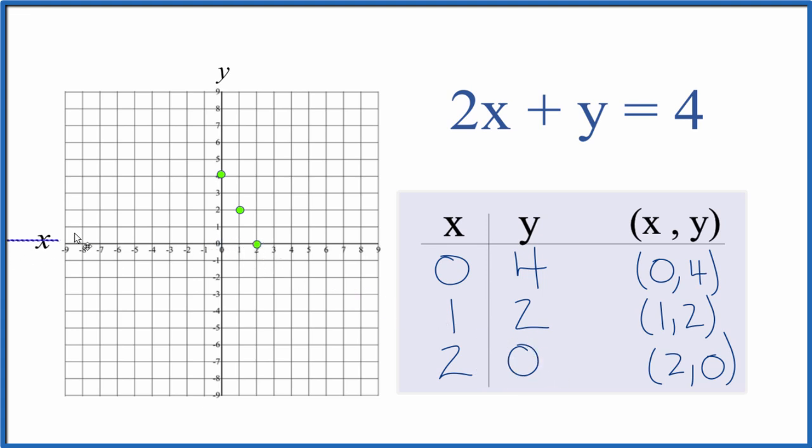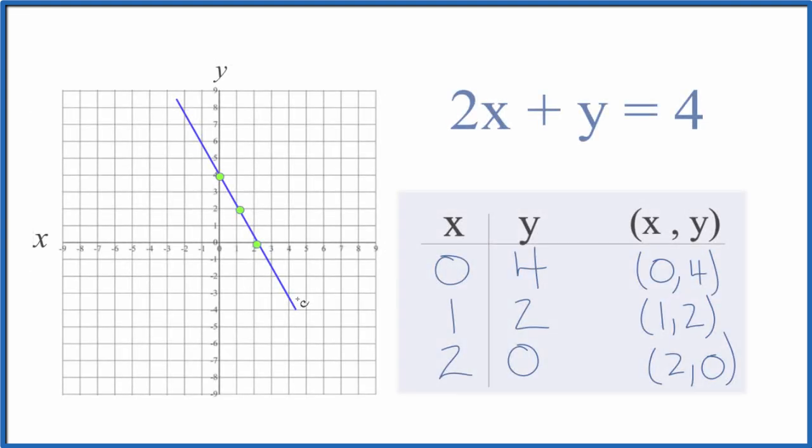You can see we have a line. Let's put a line through that. We put arrows here to show it goes to infinity. And this is our graph for 2x plus y equals 4.